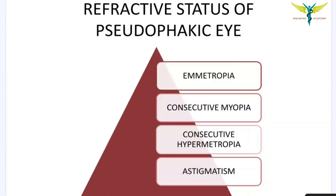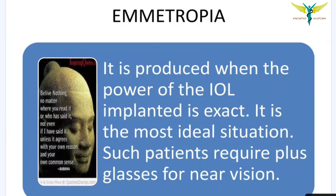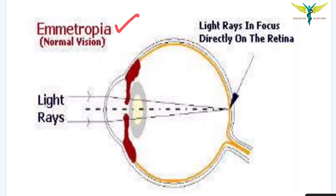Regarding the refractive status of the pseudophakic eye, it can be emmetropia, consecutive myopia, consecutive hypermetropia, or astigmatism. Emmetropia is produced when the power of the IOL implanted is exact — it is the most ideal situation. In emmetropia, patients require fewer glasses for near vision, and light rays focus directly on the sensory retina.